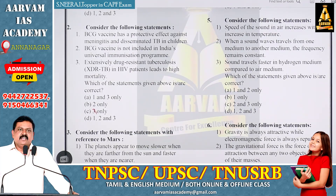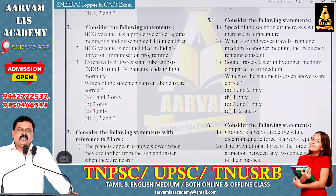Hepatitis B is in the universal immunization program, but hepatitis C is not included — that is a specific aspect of UIP. It is a very tricky question, but hepatitis B or C clarification is important. This option is easily eliminated.